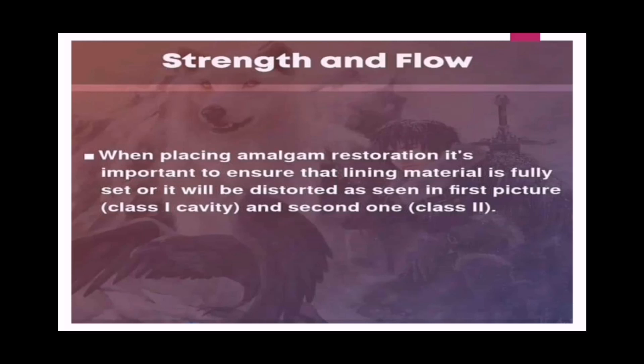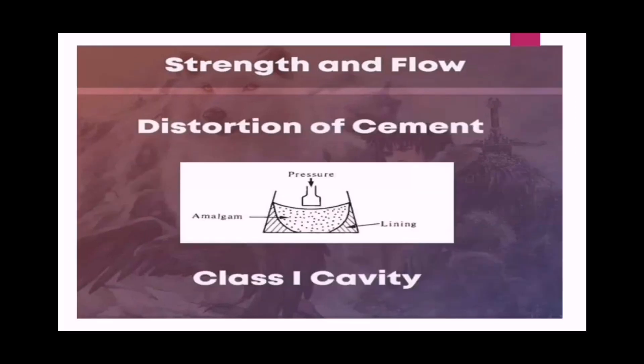When placing amalgam restoration, it is important to ensure that the lining material is fully set, or it will be distorted — as seen in the pictures showing Class 1 and Class 2 cavities. Distortion of the cement takes place when the dental lining cement is not well set when filling material is placed over it. To prevent distortion of the cement, we consider the thickness of the lining material and its set time.